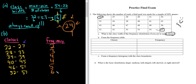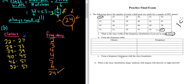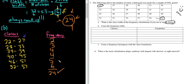The frequencies should add up to 24. Let's check: 2 plus 3 is 5, plus 4 is 9, plus 4 is 13, plus 5 is 18, plus 6 is 24. Correct! That's a nice way to verify your answer — count the numbers, add up the frequencies, and they should match.